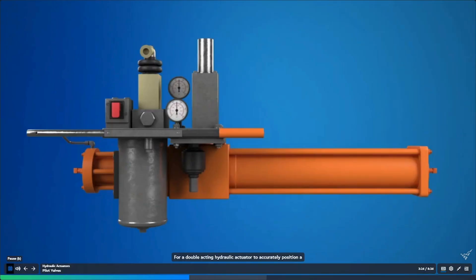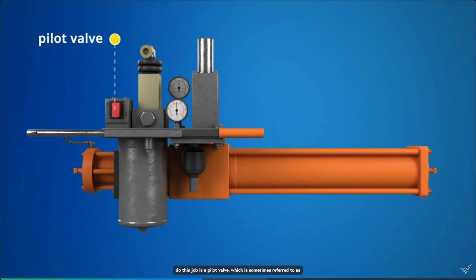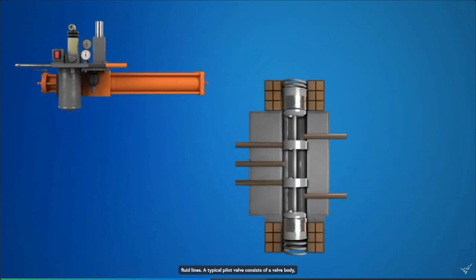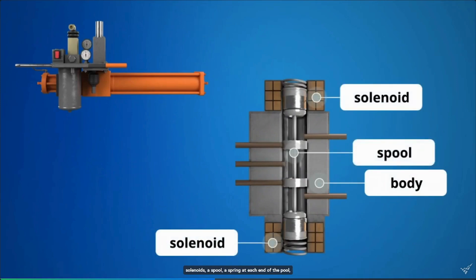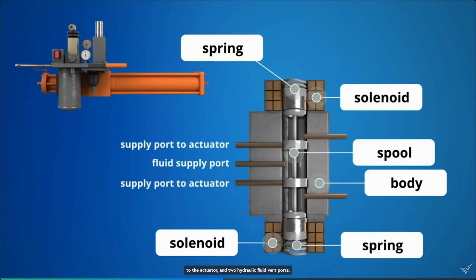For a double-acting hydraulic actuator to accurately position a valve, the amount of fluid fed to and bled from the cylinder must be accurately controlled. The device usually selected to do this job is a pilot valve, which is sometimes referred to as a spool valve. The pilot valve is connected to the actuator by fluid lines. A typical pilot valve consists of a valve body, solenoids, a spool, a spring at each end of the spool, a hydraulic fluid supply port, two hydraulic fluid supply ports to the actuator, and two hydraulic fluid vent ports.